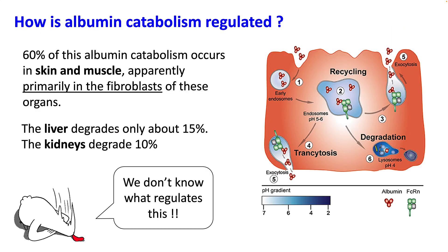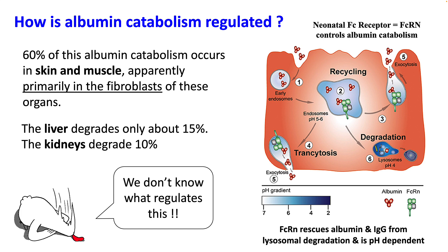Similarly, we don't know what regulates catabolism. 85% of the albumin made daily is catabolized in skin and muscles, primarily in fibroblasts, and around 25% is also catabolized by the liver and kidneys. Albumin catabolism happens in lysosomes, and the degradation requires low pH. The neonatal Fc receptor molecule controls albumin catabolism — it prevents lysosomal degradation of both albumin and immunoglobulin G. Patients deficient in this receptor will have a shorter half-life of albumin.